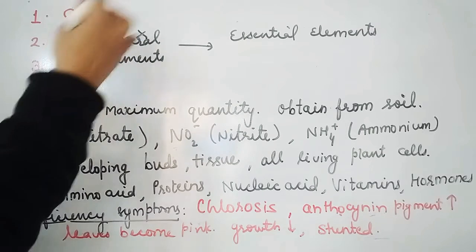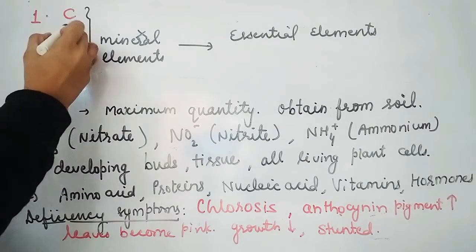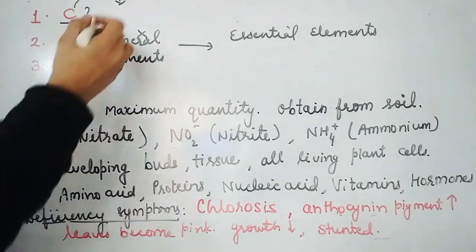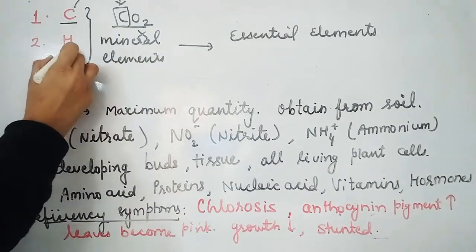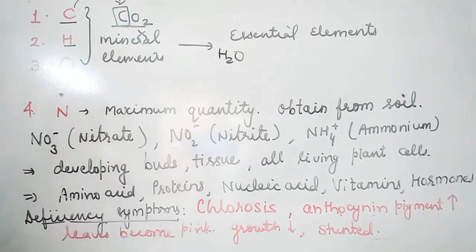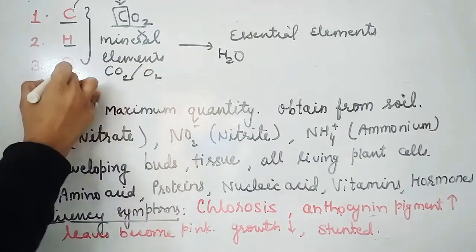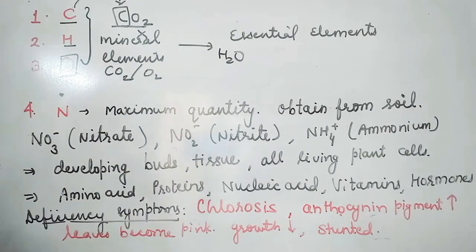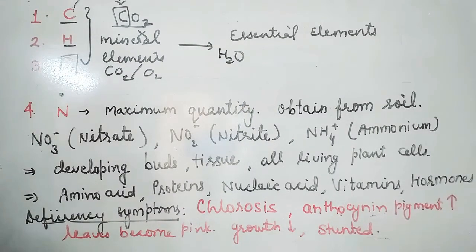However, Carbon, Hydrogen, and Oxygen are very important for plants. Carbon is absorbed in the form of CO2, Hydrogen in the form of water, and Oxygen also through CO2 and water. They are not in the mineral category, but plants cannot complete their life cycle without them, so they are called essential elements. Because they are abundantly available, deficiency symptoms are not observed for these elements.